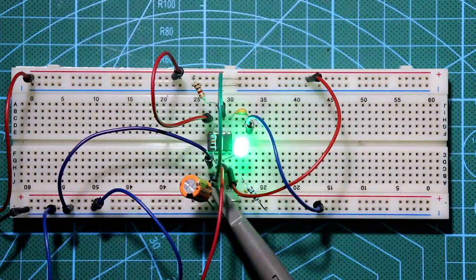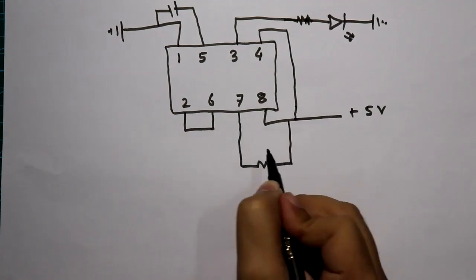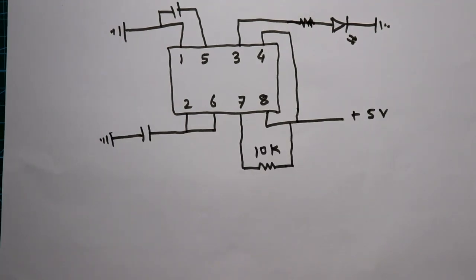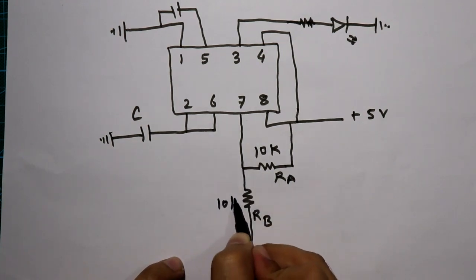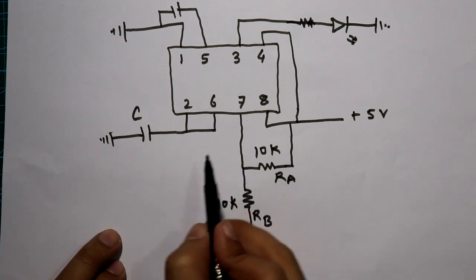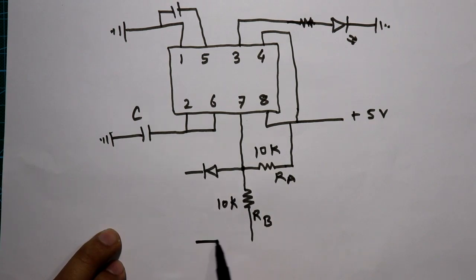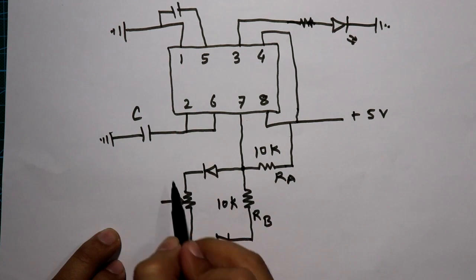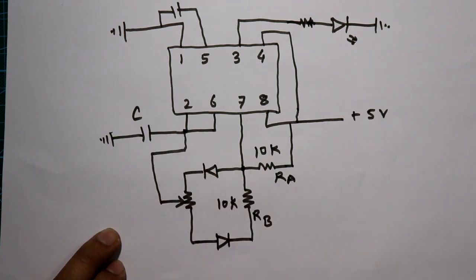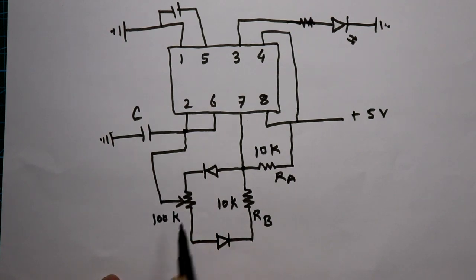To get a proper variable PWM signal, we need to replace the RB resistor with a potentiometer and two diodes, and use a lower capacitor value for higher frequency. We connect one diode in one direction and another diode in the other direction, both connected to a 10 kilohm potentiometer. The middle pin of the potentiometer connects to pin numbers 6 and 2, and the potentiometer value is 100 kilohms.